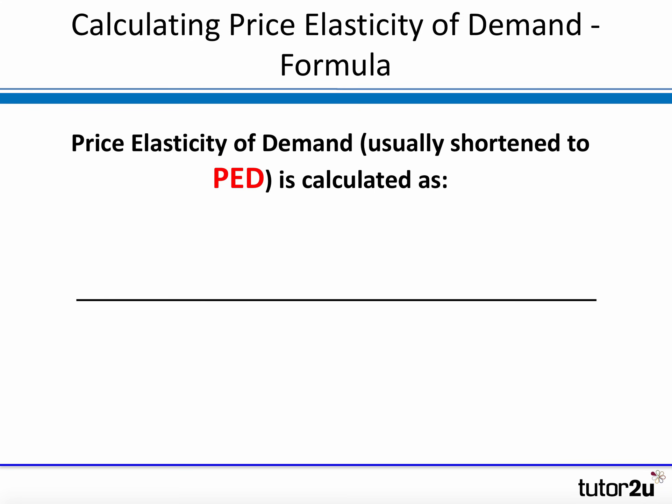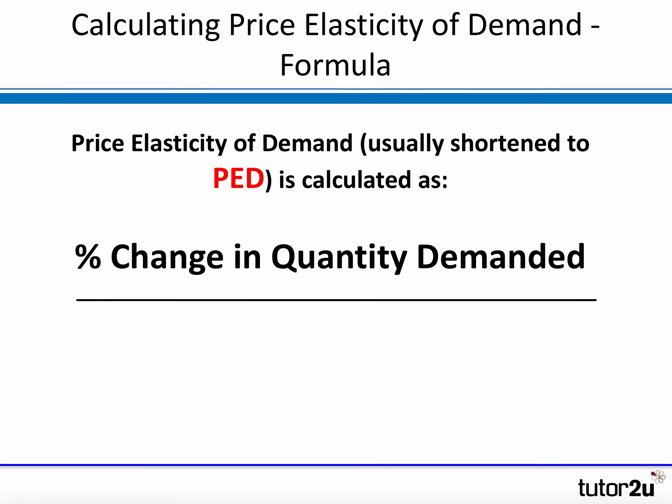When we calculate price elasticity of demand, we need to be comfortable with the concept of percentage changes. Price elasticity of demand — or PED as it's commonly shortened to — is calculated by dividing one percentage change by another: the percentage change in quantity demanded divided by the percentage change in price. Let's have a look at an example to show the calculations and consider the implications.